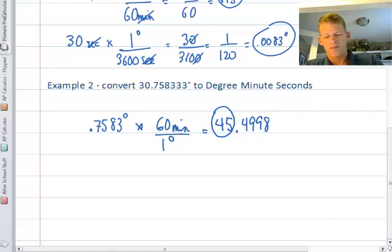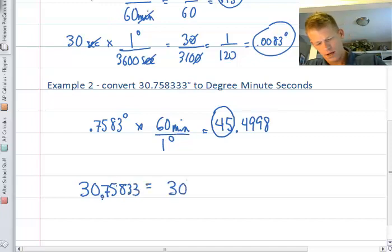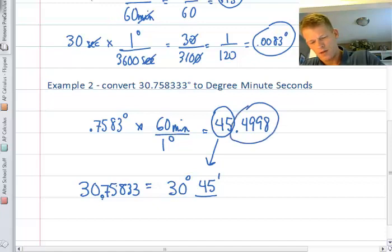We know we have 45 whole minutes. So 30.75833 equals 30 degrees and 45 minutes. Now this decimal .4998 is going to fill out my seconds portion. Let's see what that would be.